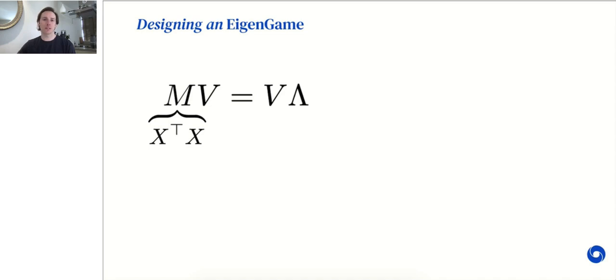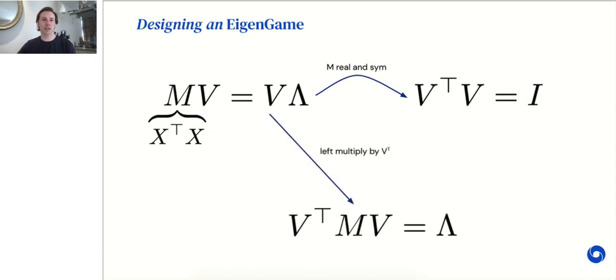We can derive this intuition directly from the eigenvalue problem. Specifically, we want to compute the eigenvalues and eigenvectors of the data covariance matrix M equals X transpose X. The data covariance matrix M is a real symmetric matrix. Therefore, it admits an orthonormal set of eigenvectors, so we can add an additional constraint to our desired solution. Left multiplying the eigenvalue problem by V transpose and using the orthonormality constraint to simplify gives us the following equivalent problem where V transpose MV is equal to a diagonal matrix lambda. That is to say, the eigenvectors V diagonalize M.